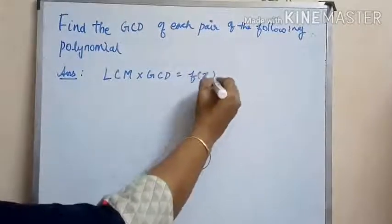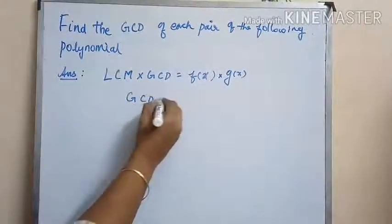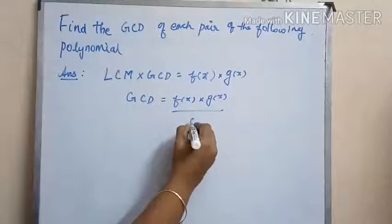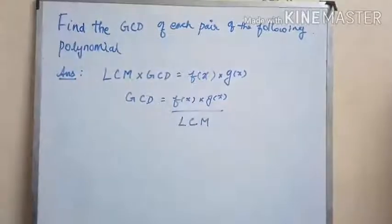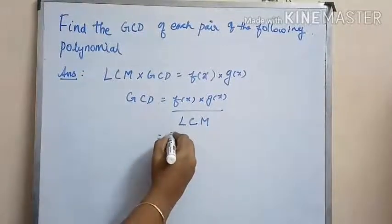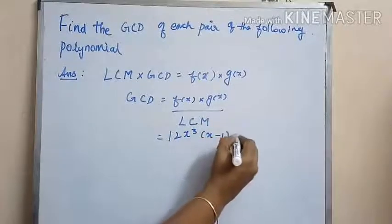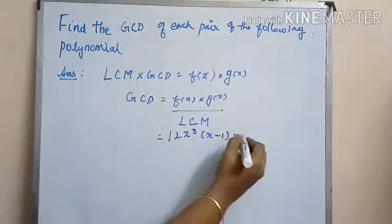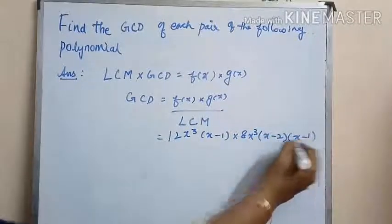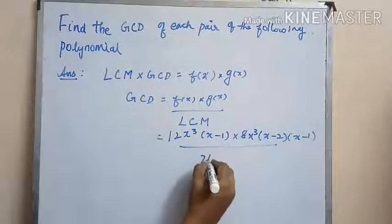From this we can infer the GCD. So GCD is equal to f(x) into g(x) divided by LCM. f(x) is 12x cubed into (x minus 1), g(x) is 8x squared into (x squared minus 3x plus 2), which is x squared into (x minus 2), divided by LCM which is 24x cubed into (x minus 1) into (x minus 2).